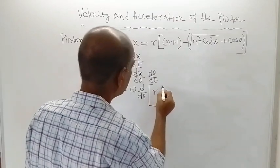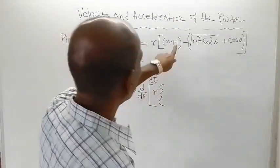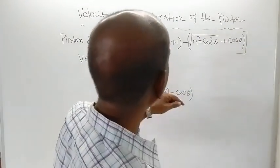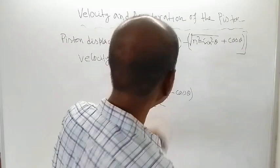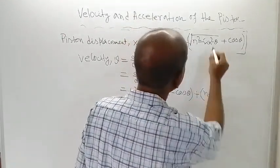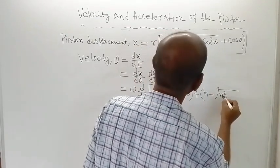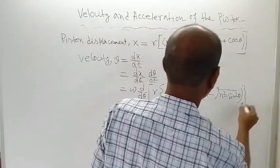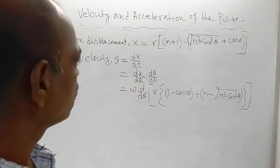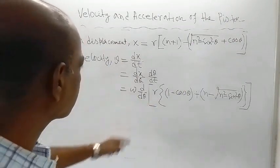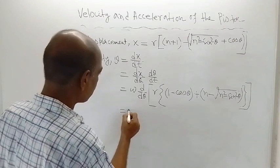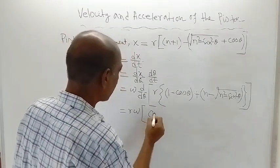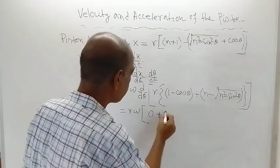R is present, and simple algebraic manipulation gives: 1 minus cosθ. Then plus n minus the expression which is √(n² - sin²θ). R is a constant, so it can be taken outside the derivative sign. So we have R·ω, and d/dθ of 1 is 0, and d/dθ of cosθ is -sinθ, so this becomes +sinθ. Also, d/dθ of n is 0.